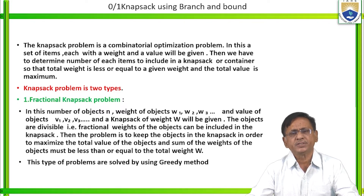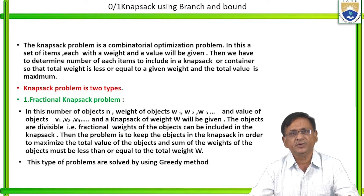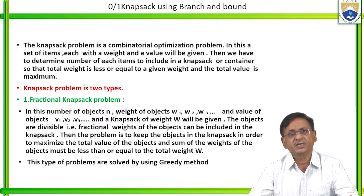The Knapsack Problem is of two types: the Fractional Knapsack and the 0-1 Knapsack Problem. In the Fractional Knapsack Problem, the objects are divisible. For example, filling a basket with vegetables like potatoes, tomatoes, carrot, beetroot — these can be divided into 1 kg, 2 kg, 3 kg portions. This corresponds to the Fractional Knapsack Problem.